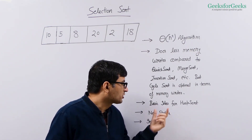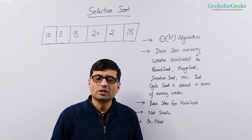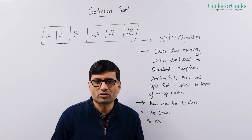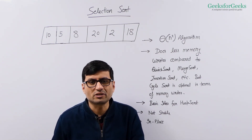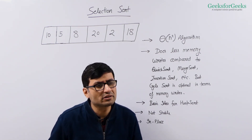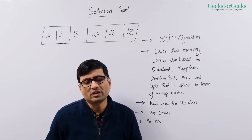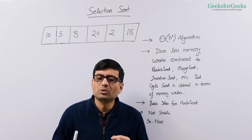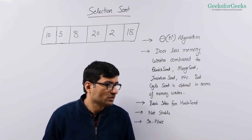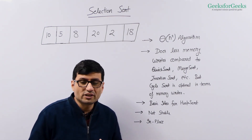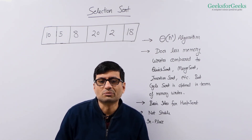The next important point about selection sort is it's the basic idea for heap sort. Heap sort's idea is based on selection sort only — it just uses the heap data structure to optimize the selection sort idea. Selection sort is not stable in its basic form; when we do selection sort, the order of equal elements may change. The next point is it's an in-place algorithm and does not require extra memory for sorting.